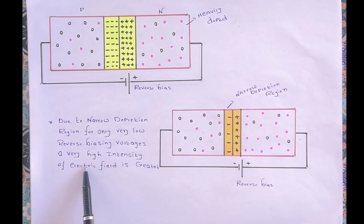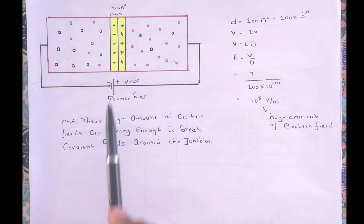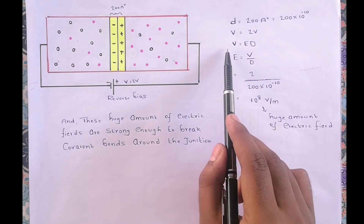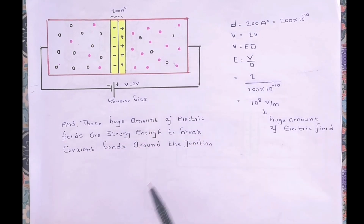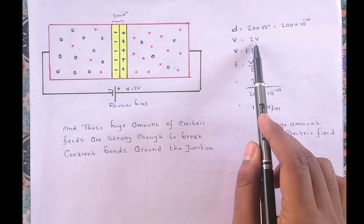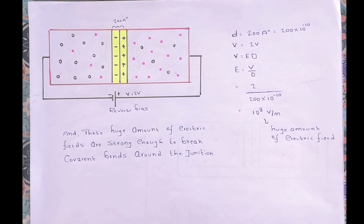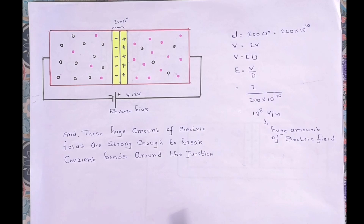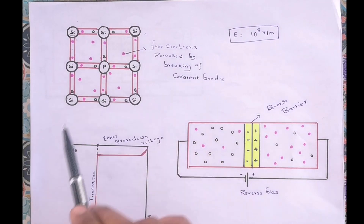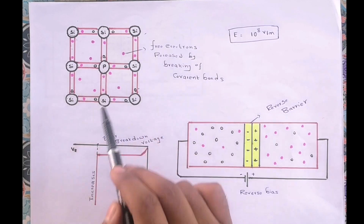We can illustrate this with a small example. Suppose the width of the depletion region is 200 angstroms, which is very small, and we apply only 2 volts. Using the formula E = V/d, the electric field intensity is E = 2 / (200 × 10⁻¹⁰), which gives us E = 10⁸ volts per meter. That is a huge amount of electric field, strong enough to break covalent bonds around the junction, or in other words, intense enough to pull electrons directly out of the covalent bonds inside the depletion layer.